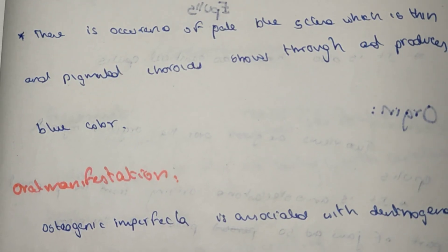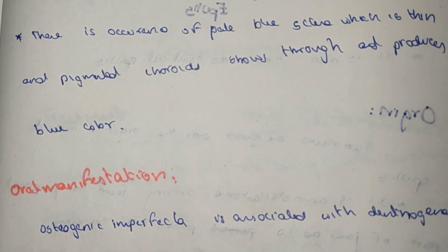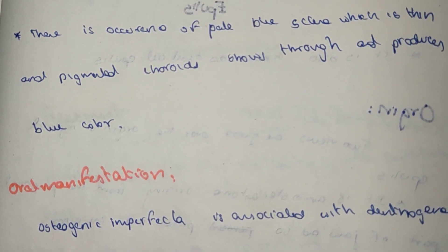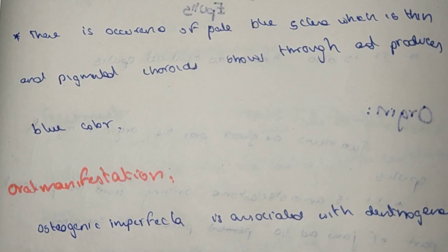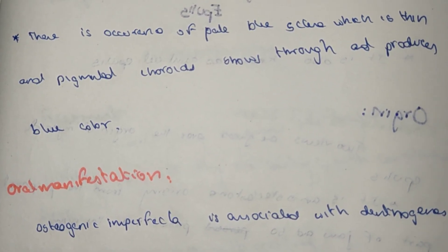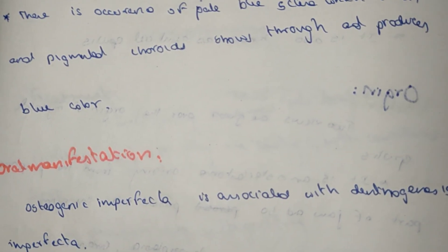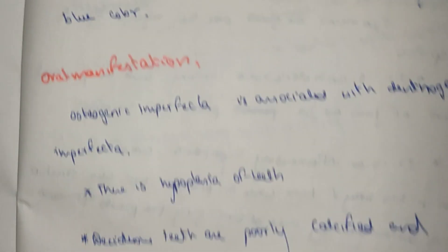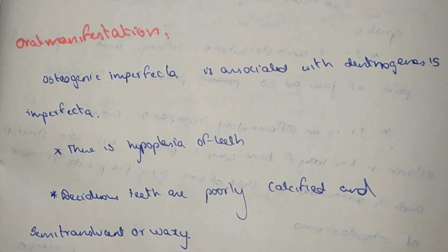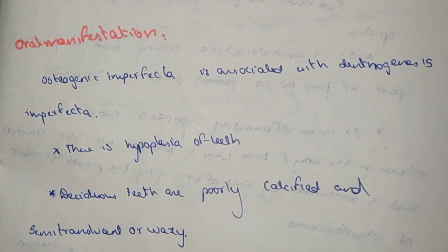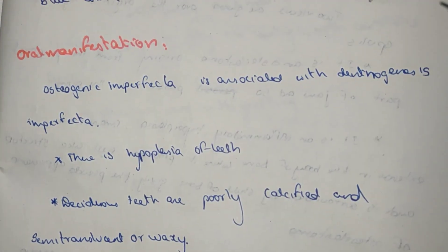There is occurrence of pale blue sclerae. The sclerae appear blue in color because the underlying choroid pigment shows through. Overall, osteogenesis imperfecta and dentinogenesis imperfecta are both manifestations of this condition.